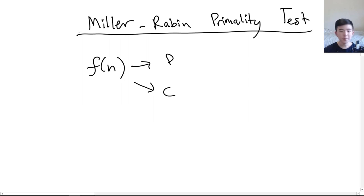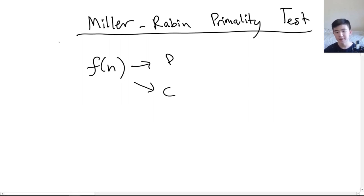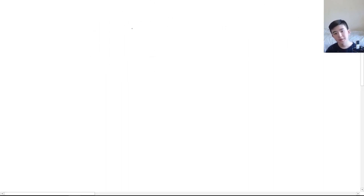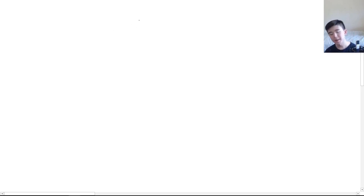Before we get into the explanation it could be helpful to understand a little bit of modular arithmetic and a little bit of algebra, but I'll explain the necessary symbols and notation here. Modular arithmetic is basically the study of remainders when you divide one integer by another.